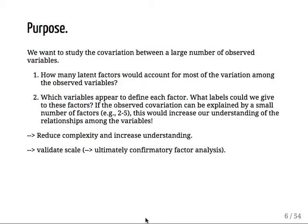We want to study the covariation between a large number of observed variables, also known as indicators. How many latent factors would account for most variation among those variables? If you do personality, you might have heard of the big five. I'm in camp big six, so I believe there are six personality factors. You also have people who believe there's a big two or big one.